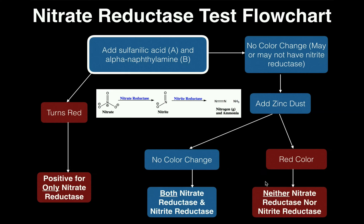You need to learn this flowchart and, given a set of information, be able to predict the result. For example: in a nitrate broth, we added 16 drops of sulfanilic acid and alpha-naphthylamine and had an immediate red color change — that indicates only nitrate reductase is present. Another question: sulfanilic acid and alpha-naphthylamine were added with no color change, then zinc dust was added and we got a red color — that means you have neither of these two enzymes.